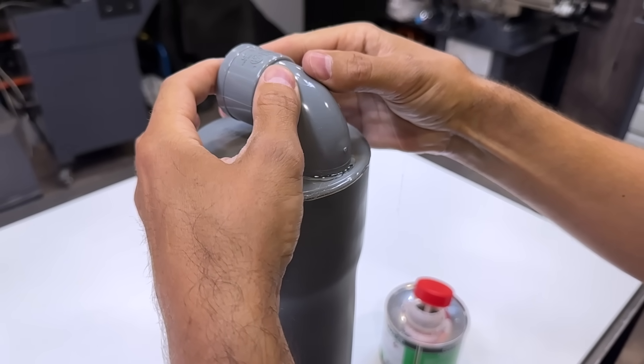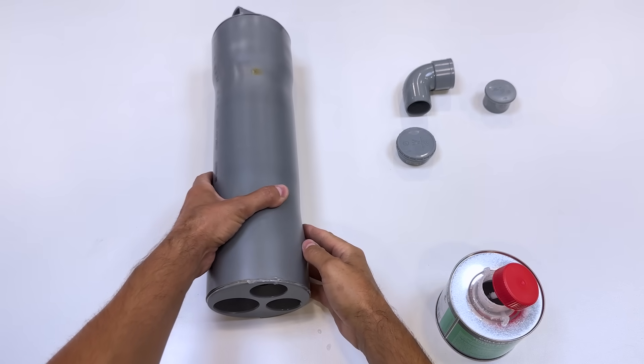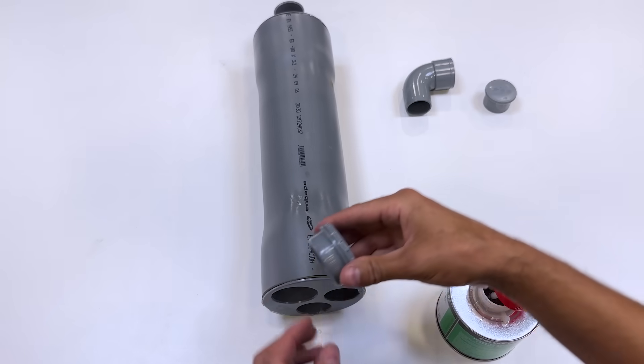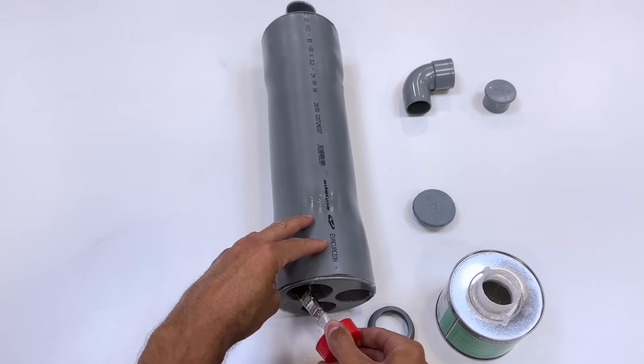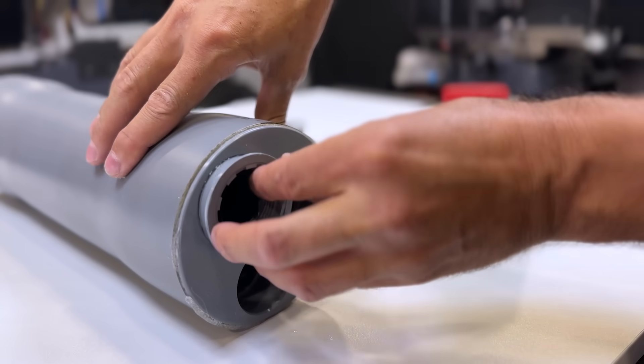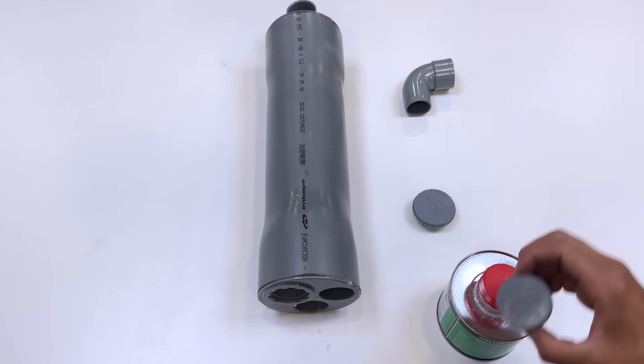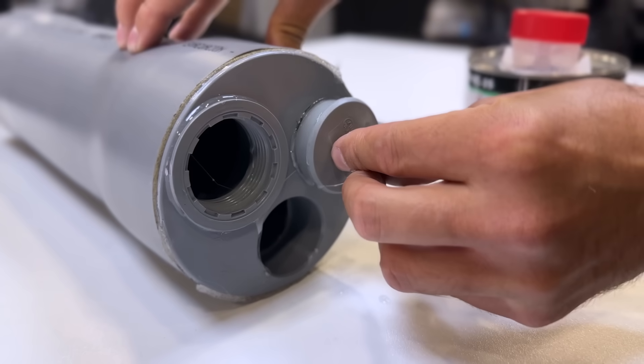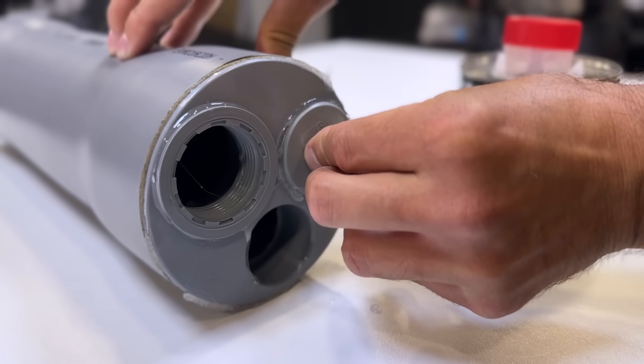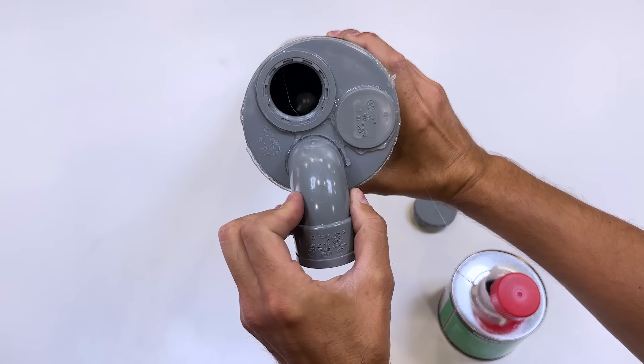Here we will glue this 90 degree elbow. This is a 50 millimeter diameter plug with threads. We will glue it here. We seal one of the holes with a plug, and in the other hole we put this 90 degree elbow.